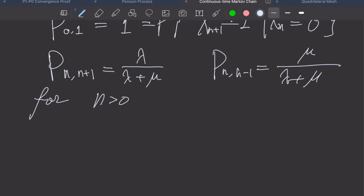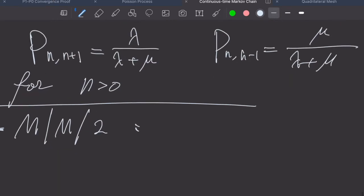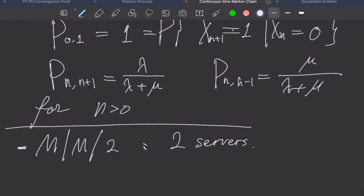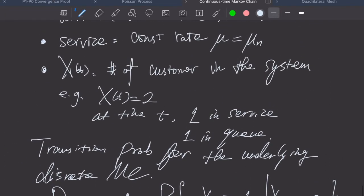For simplicity, let's consider M/M/2. We still follow the first-in-first-out rule, but this time we have two servers. X(t) still is the number of customers in the system.